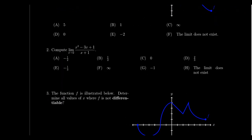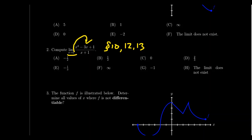Question number two will also be about computing limits, but this will be an algebraic calculation. Primarily look at lecture 10 for limit laws, but also lectures 12 and 13 about continuity — there are situations where since a function is continuous, we can just plug in the number. For example, as x approaches two, we can just plug in x = 2 into the function. That sometimes works and sometimes doesn't. I would say question number two is going to be an easy limit calculation. It won't involve any limits at infinity, so no vertical or horizontal asymptotes.